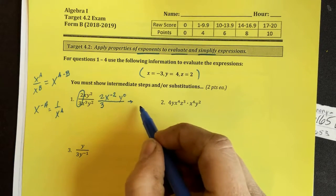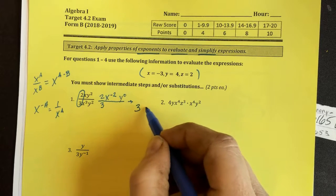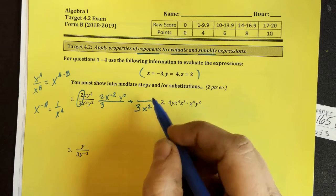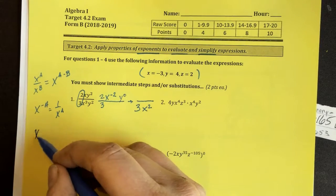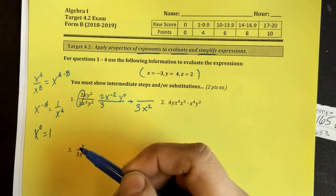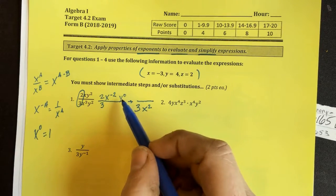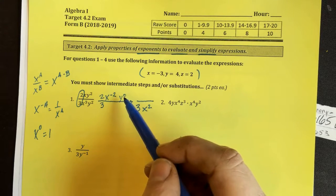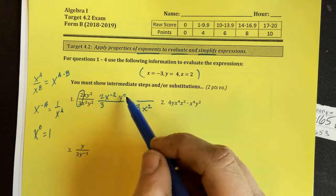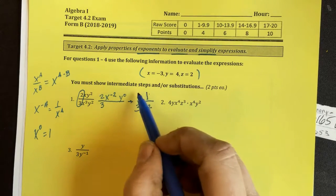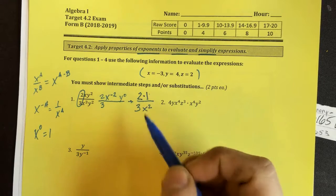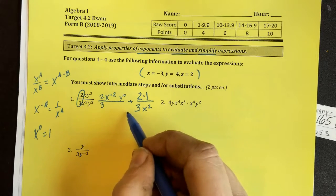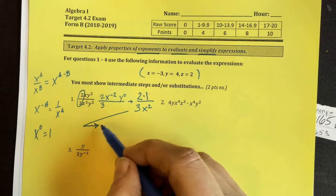The negative exponent indicates that this variable should be written on the other side of a fraction line. It no longer will be negative. It's positive. So here, this x to the negative 2 shows up in the bottom or the denominator.